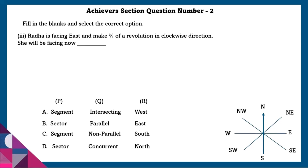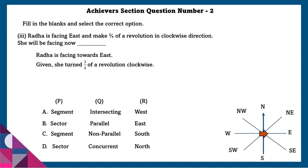Ratha is facing east and makes a 3/4 revolution in a clockwise direction. She will now be facing — 3/4 of a revolution, that is 3/4 of 360, is equal to 270 degrees. So she will be facing north.